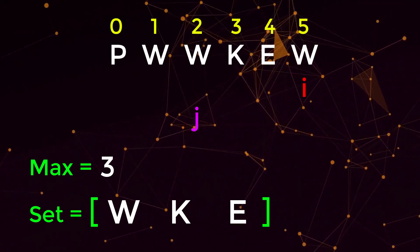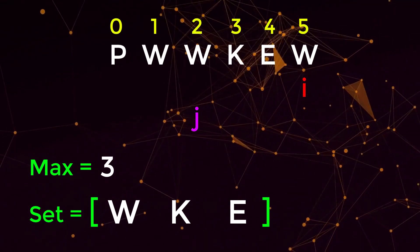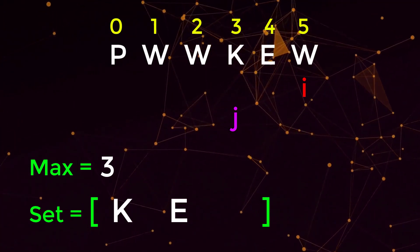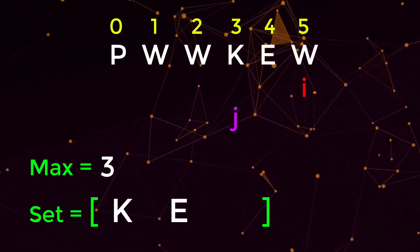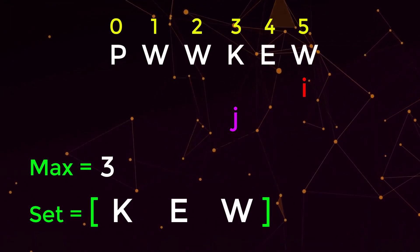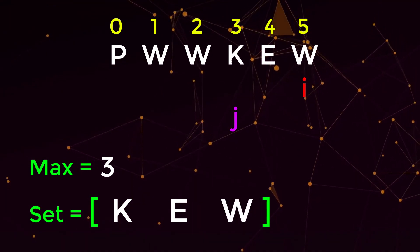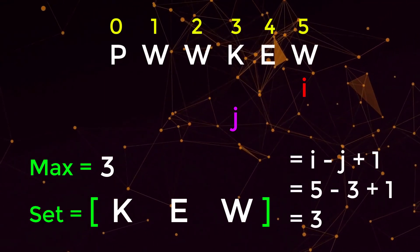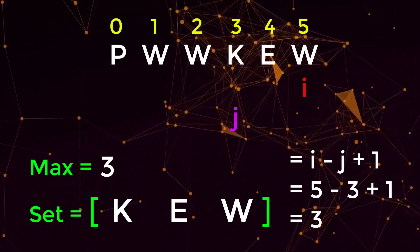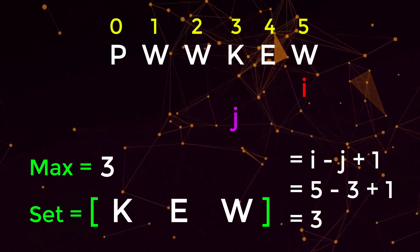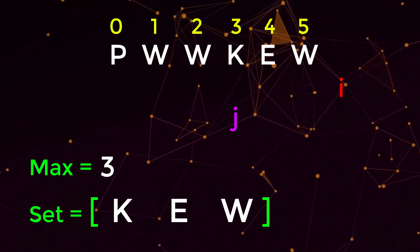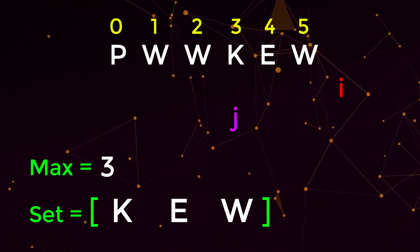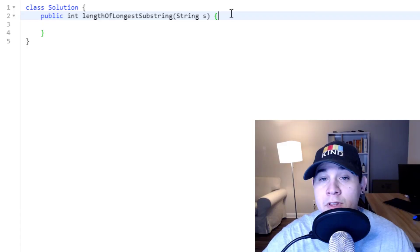We move i again and check if 'w' is in our set — it is. So we look at j, which is at character 'w', remove it from our set, and move j forward. We can now add the 'w' that i is pointing to. The window length i minus j plus one is three, corresponding to substring 'kew'. Our max is already three, so no update. Since i is now past the end of the string, we're done iterating and we return three from our function.